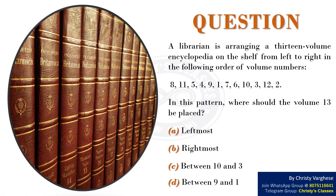In this video let us discuss a question on book arrangement. A librarian is arranging a 13-volume encyclopedia on the shelf from left to right in the following order of volume numbers: 8, 11, 5, 4, 9, 1, 7, 6, 10, 3, 12, 2. In this pattern, where should volume 13 be placed?